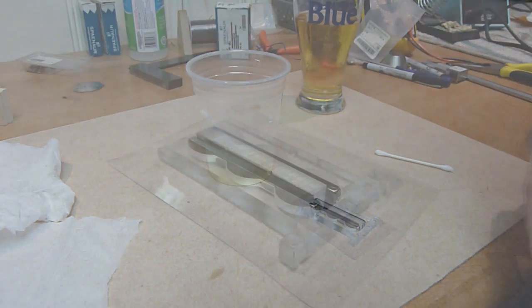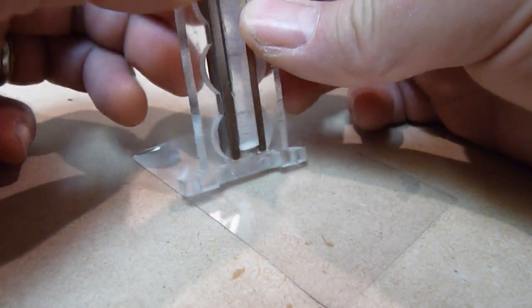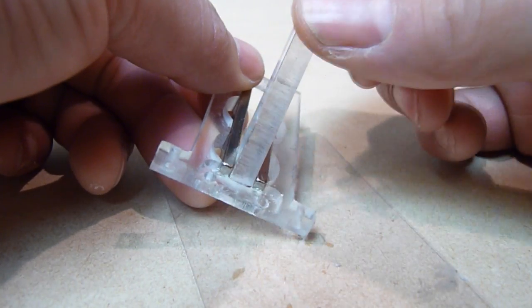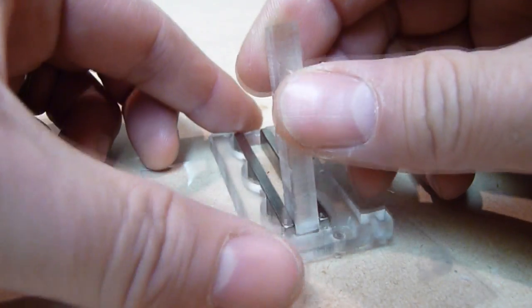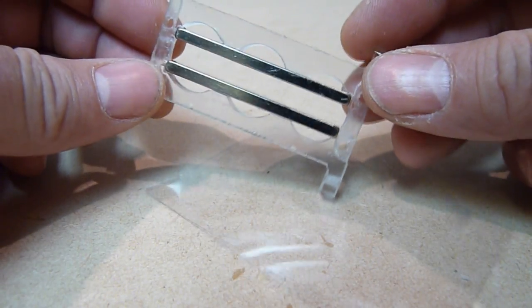And we'll let this dry overnight. So here we are the next day. The epoxy is cured 24 hours. And so now I can take that piece of plexiglass spacer and slip it out. And there we have the finished magnet and truss assembly.